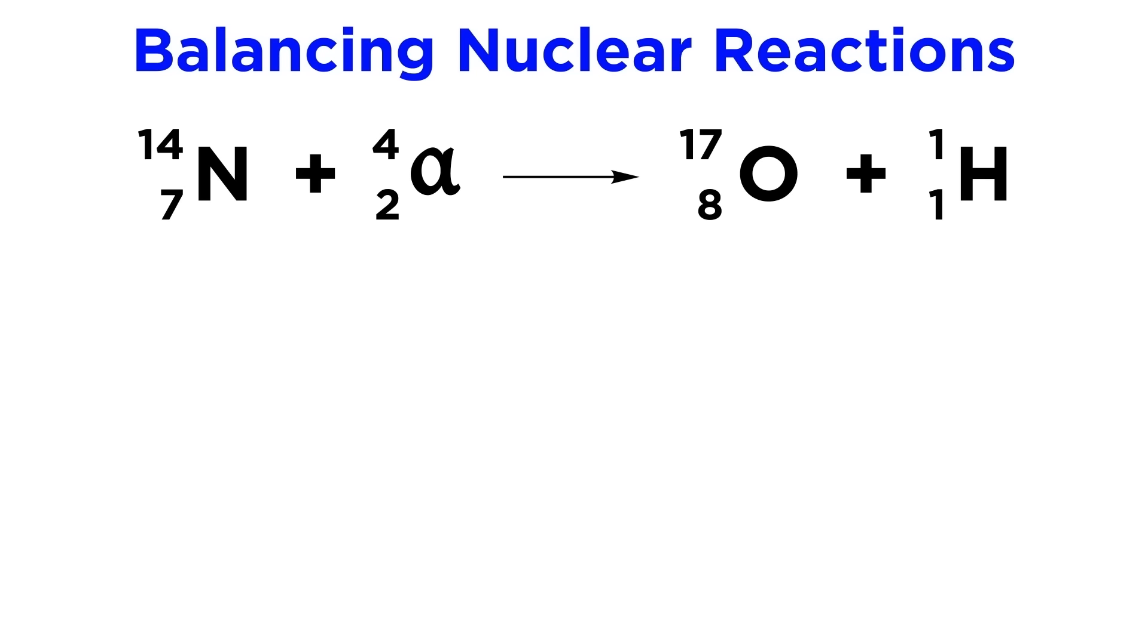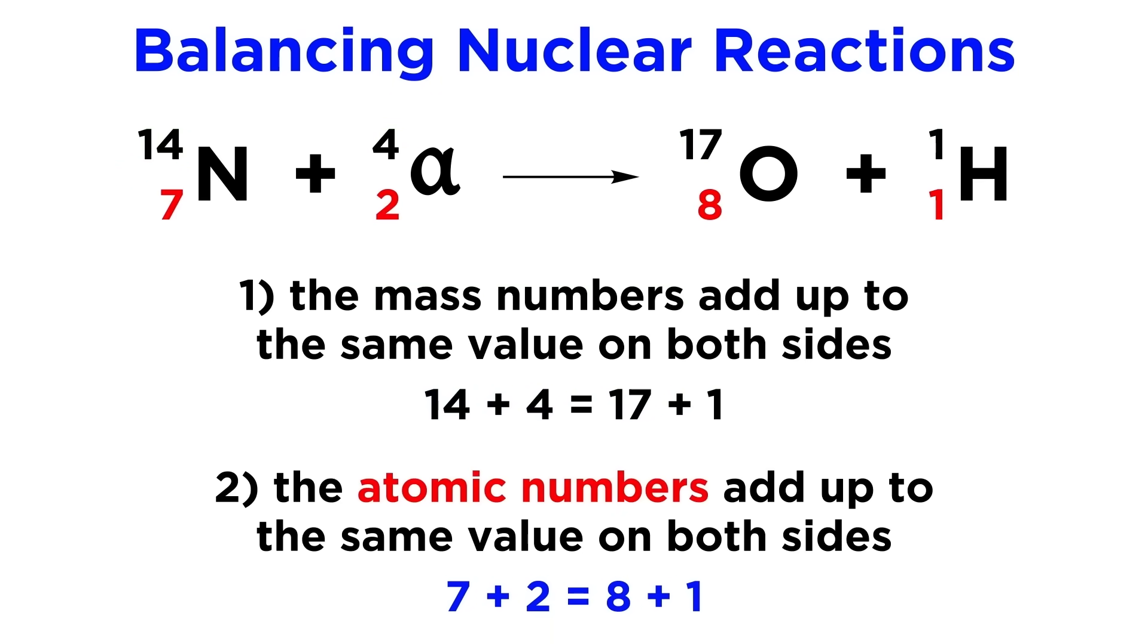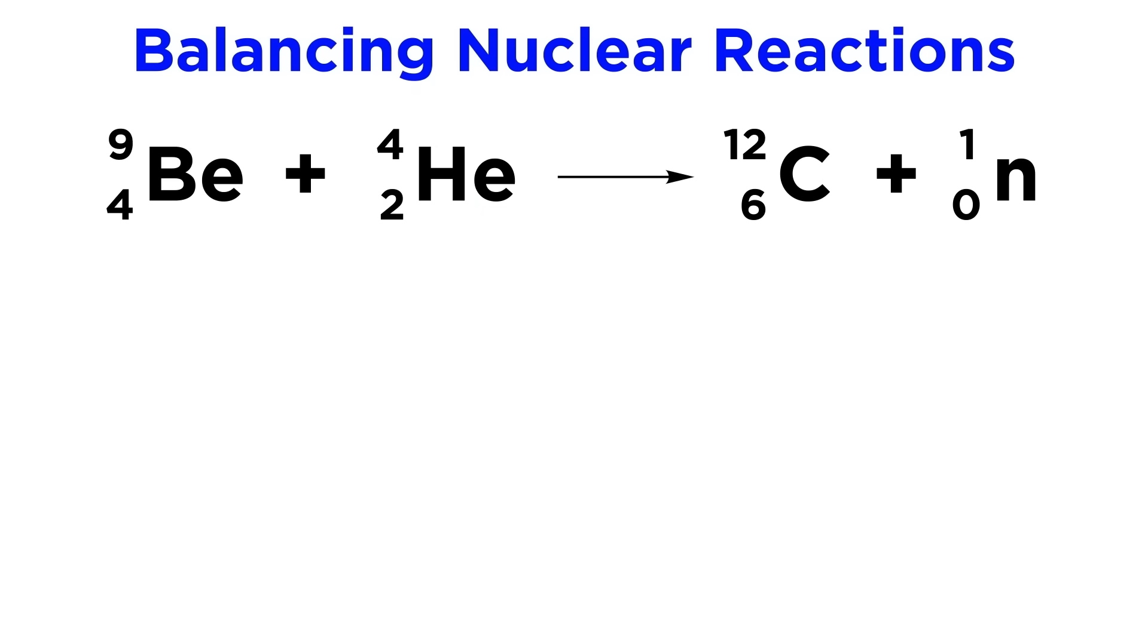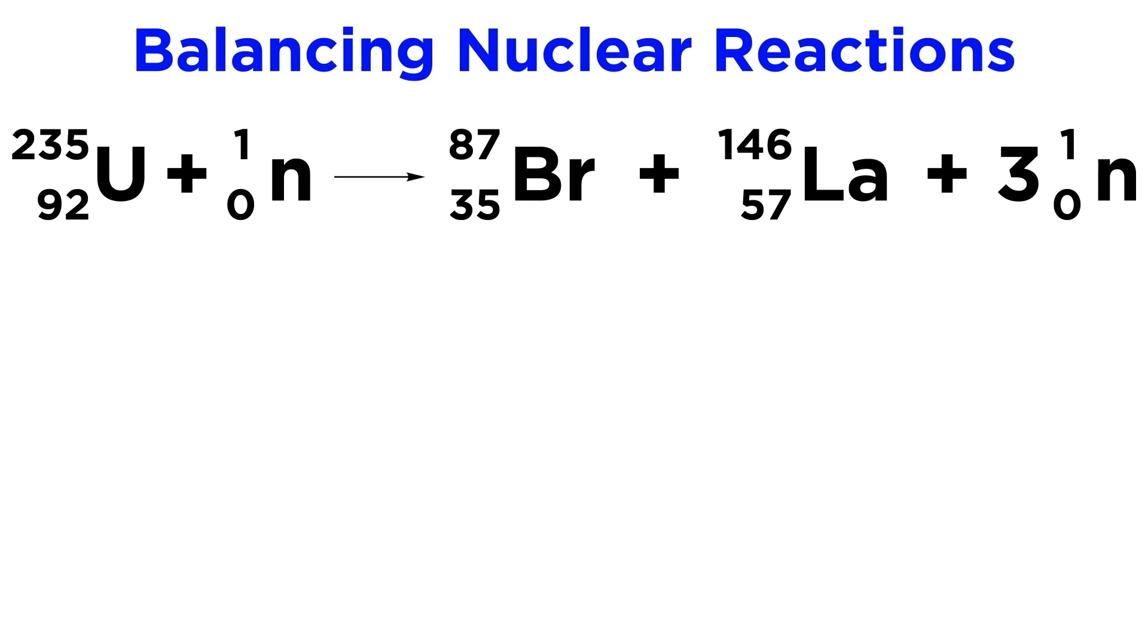Next, look at this reaction. This one says that when nitrogen-14 is bombarded by an alpha particle, it produces oxygen-17 and a proton. Again, this is valid because the mass numbers add up to 18 on both sides, and the charges add up to 9 on both sides. Here we see that if beryllium-9 is bombarded by an alpha particle, we get carbon-12 and a neutron. Again, the mass numbers and charges check out.